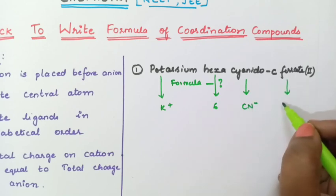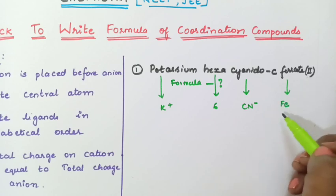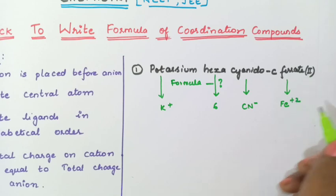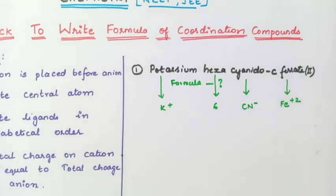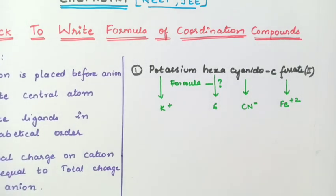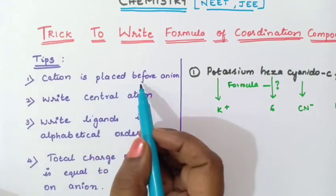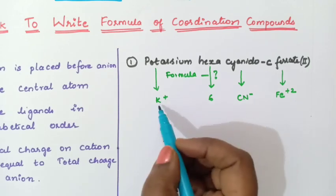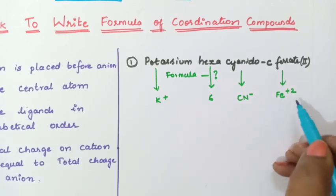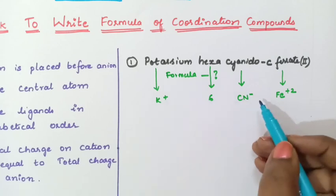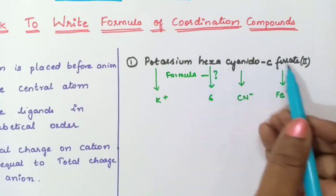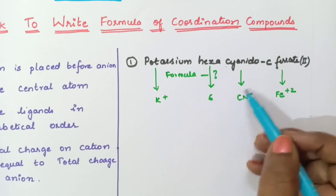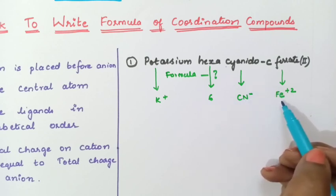Ferrate is iron, Fe. What is the oxidation state for iron? Here 2 is given in the bracket, so you will write +2. Now we are going to write the formula. Cation means positively charged ion. Here K⁺ and Fe²⁺ — always remember that after the ligand, the central metal ion will be present. Cyanido is the ligand, and after this comes the central metal atom.